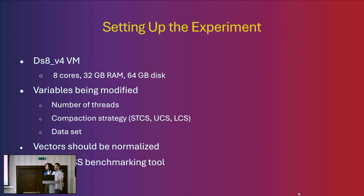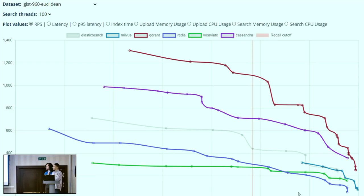We normalized all of our data sets, which means taking the vectors and making unit vectors with a magnitude of one. This ensures that when comparing vectors of different magnitudes you get a better sense of meaning between them. For the benchmarking tool, we took inspiration from the Qdrant open-source benchmarking tool and extended it to work with Cassandra.